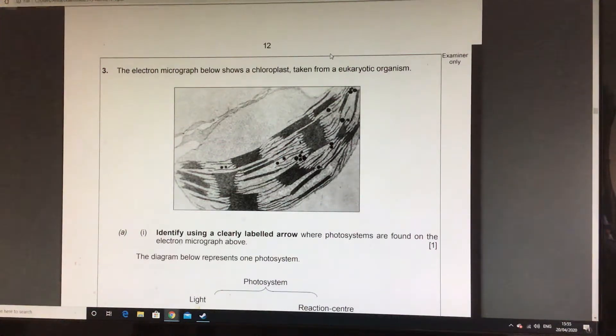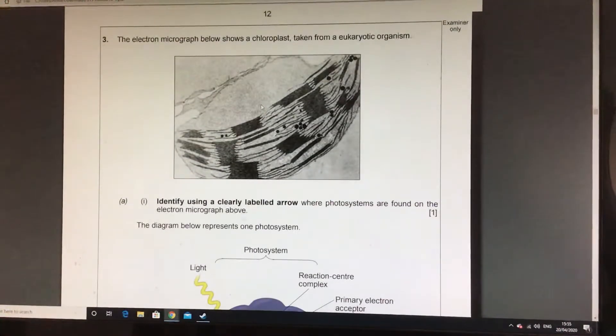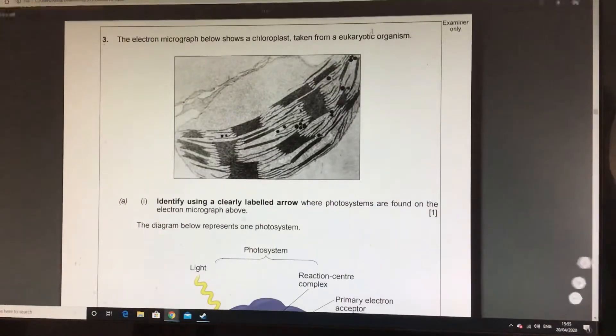There we go, I hope you're still with me. There is question 3 from the Component 1 Mock 2019. So, the very first one is straightforward. You've got an electron micrograph of a chloroplast.